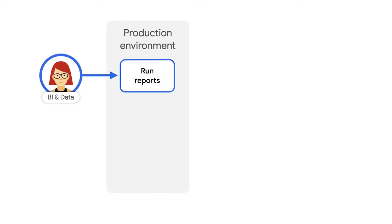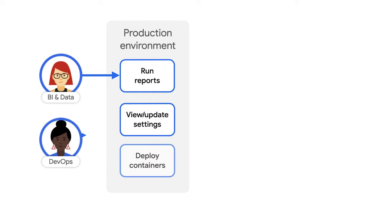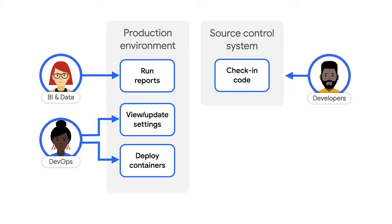That ensures that the production environment stays consistent. What else are you doing to keep production under control? We're also focusing on security. We needed to provide transparency and be strict about who can see what. For example, access groups: we have a BI and data group — they can run reports. We have a DevOps group — they can deploy code and view production.